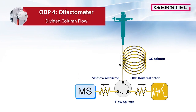This is a simple but proven design. The analytes coming from the GC column are divided by a splitter or capillary flow technology device into the MS and olfactory detector. The parallel analytical detection by any GC detector can be set up with a user-defined split ratio.